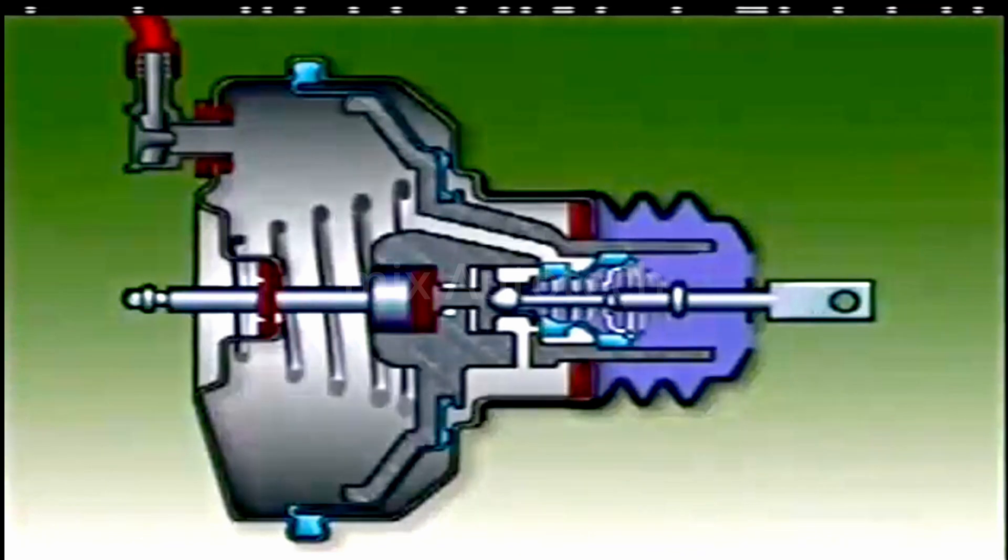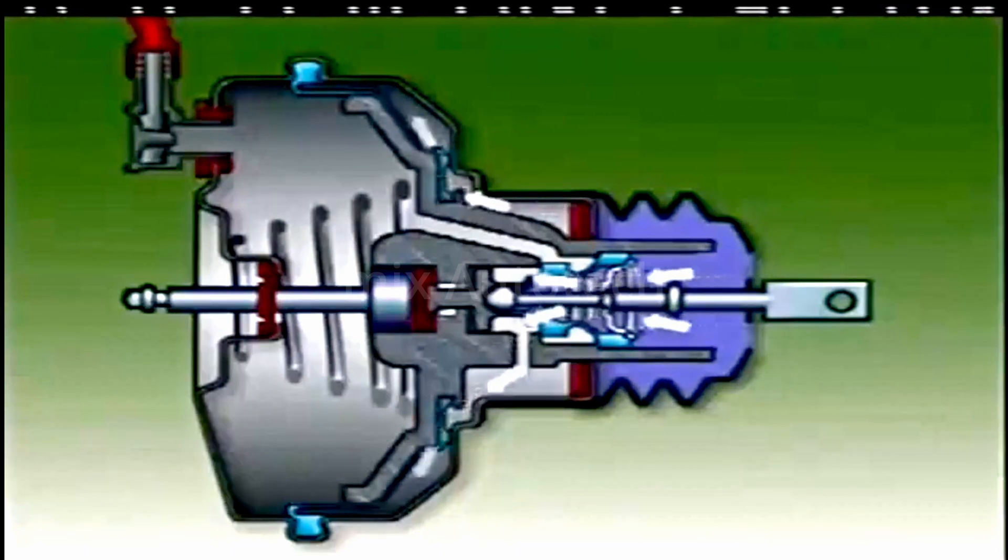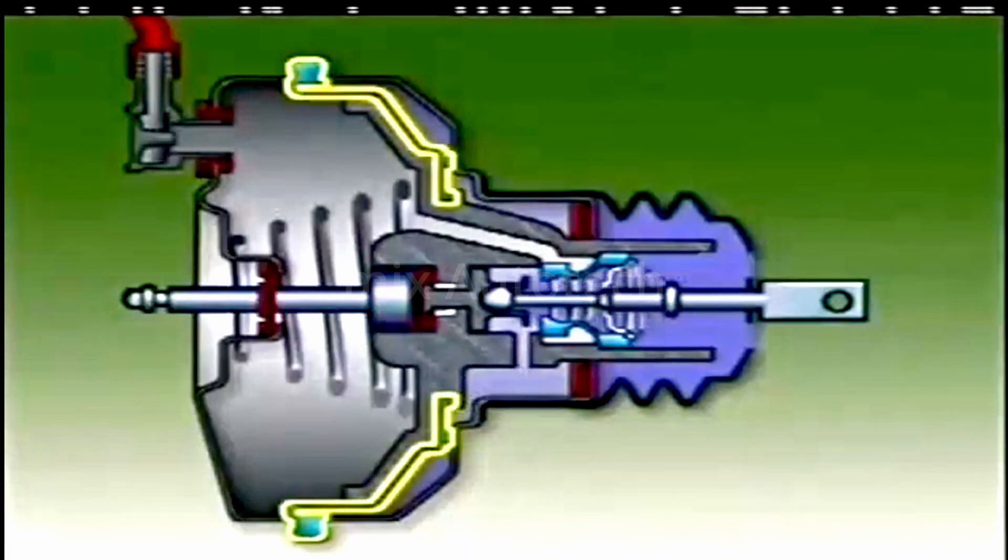Further movement of the pushrod and plunger moves the air valve away from the control valve to open the atmospheric port. Air at atmospheric pressure comes into the air filter and passages and enters the chamber at the rear of the diaphragm.